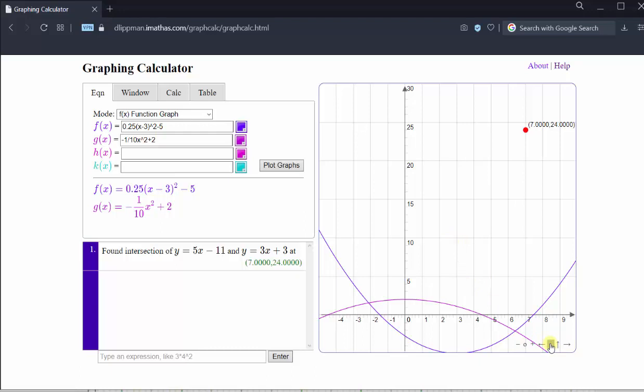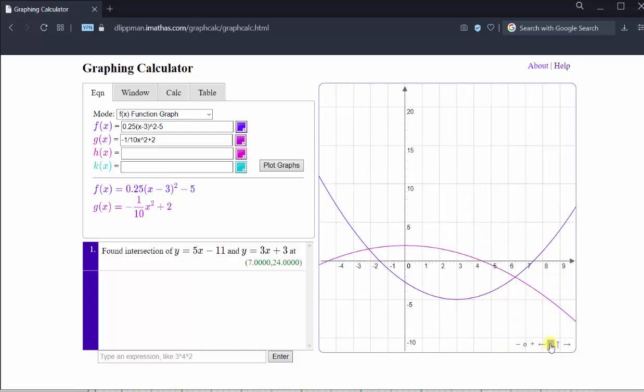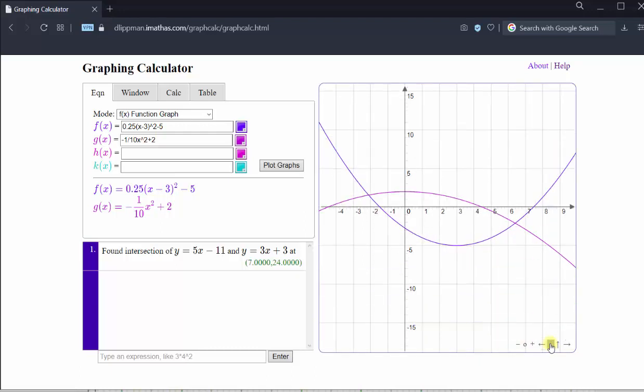Notice how if we click the down arrow, it moves the graph upward. And now we have a nice view of both graphs. Notice here we have two points of intersection. Let's go ahead and calculate them.